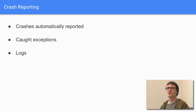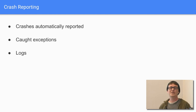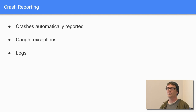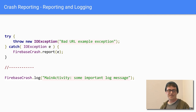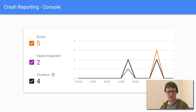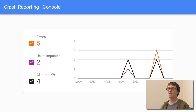Crash reporting is mostly automatic. If something fatally crashes your app, it shows up in analytics and the crash reporting section of the console. You can find out what users are doing to break your app. For non-fatal errors in catch blocks, call FirebaseCrash.report() passing the exception. You can also call FirebaseCrash.log() for standard logs. The console clusters crashes together so you can see which users are affected, their devices, and related issues.